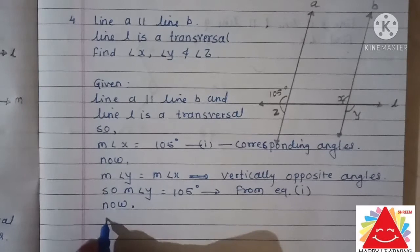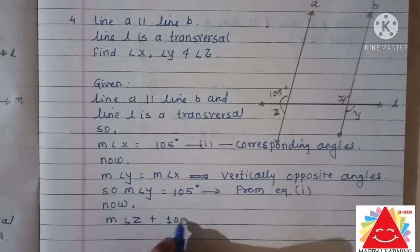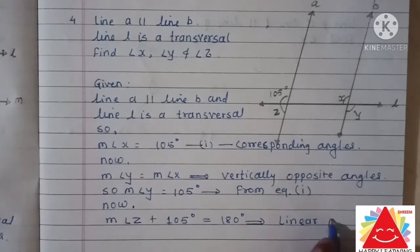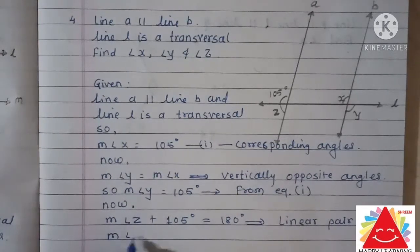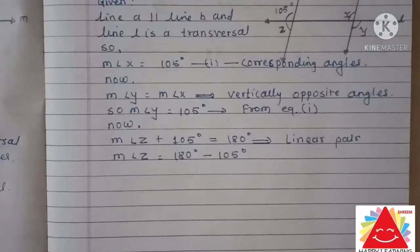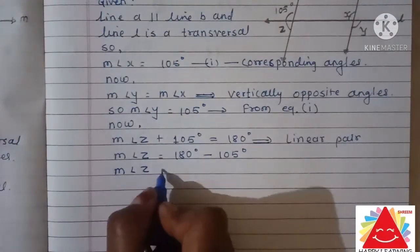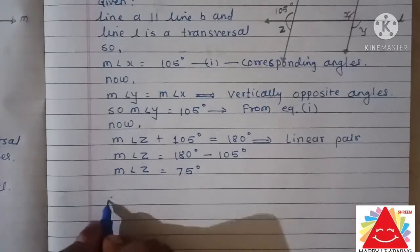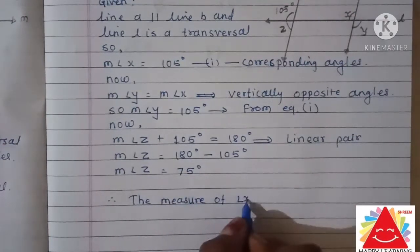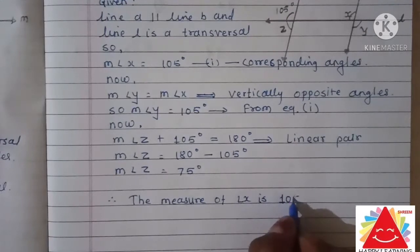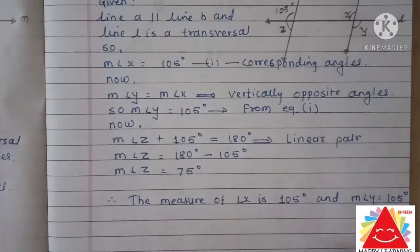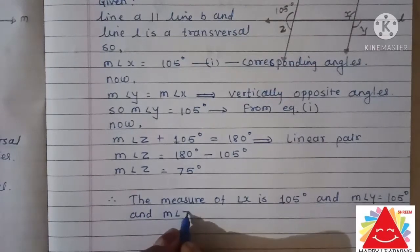The measure of angle Z plus 105 degrees equals 180 degrees because they form a linear pair. Therefore, angle Z equals 180 minus 105 equals 75 degrees. So the measure of angle X is 105 degrees, the measure of angle Y is 105 degrees, and the measure of angle Z is 75 degrees.